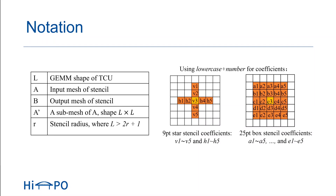Finally, I will make a conclusion. This paper presents the first work to use the tensor core unit to accelerate stencil computation. We implement TC-Stencil on GPU and perform several optimizations to the implementation. Our experiments show that TC-Stencil can achieve significant speedup compared to state-of-the-art stencil optimization frameworks. This concludes the presentation, and thank you for listening.